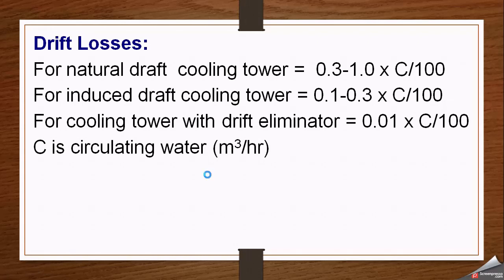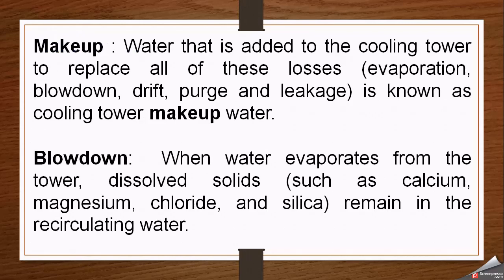In all these relations, C is the circulating water circulation rate taken in cubic meters per hour. Another important term in cooling tower operation is makeup water — the water that is added to the cooling tower to replace all losses including evaporation, blowdown, drift, purge, and leakage. All types of losses are covered by adding fresh water, known as makeup water.